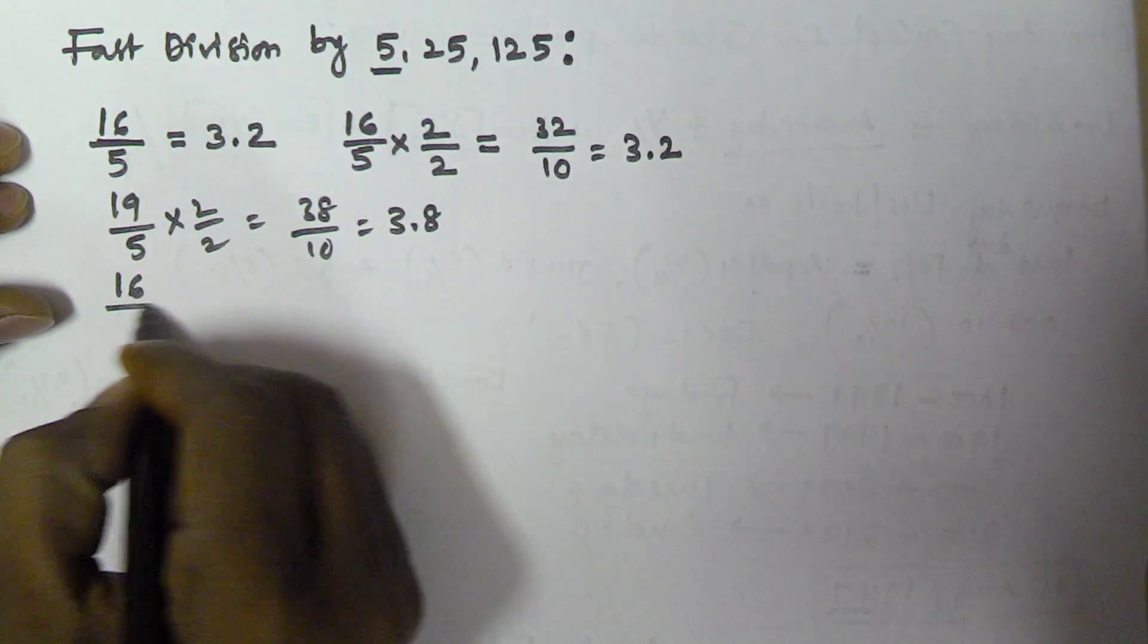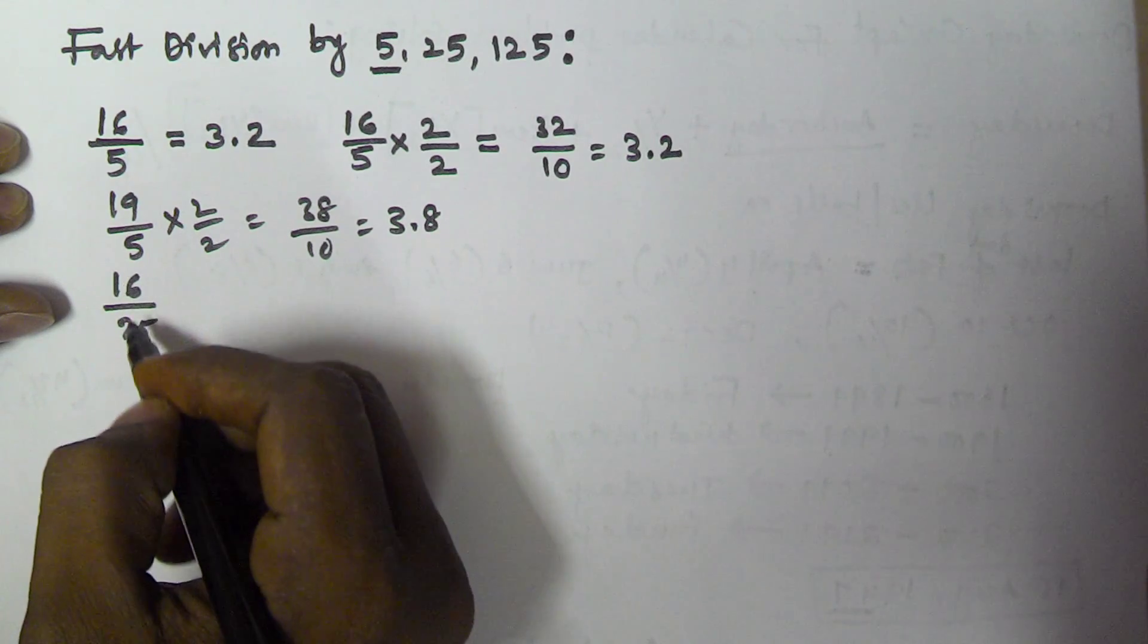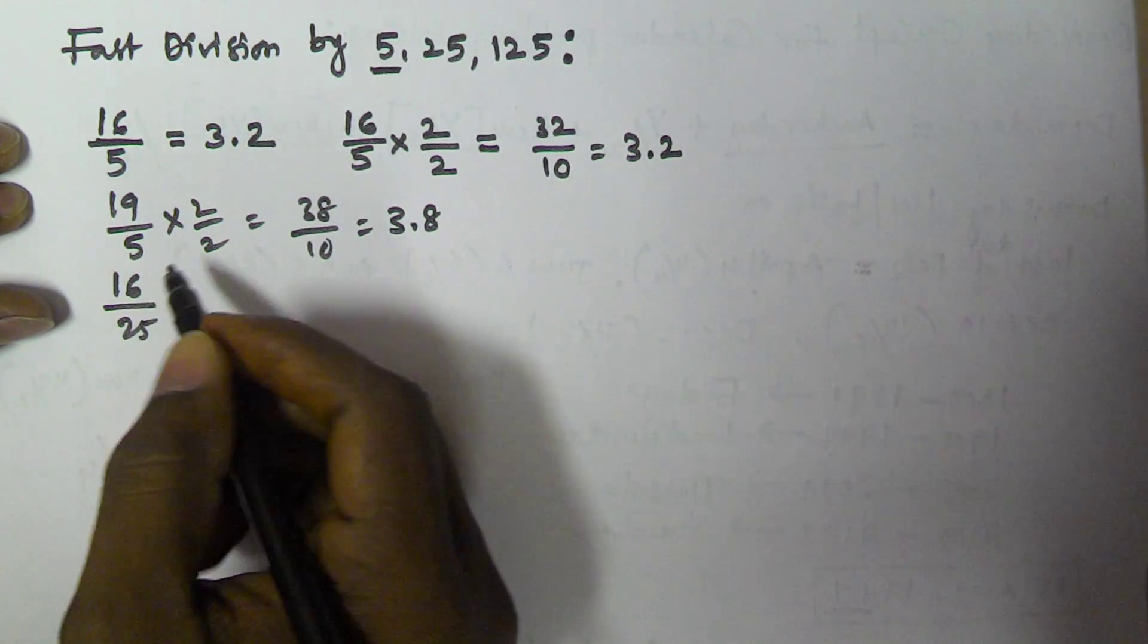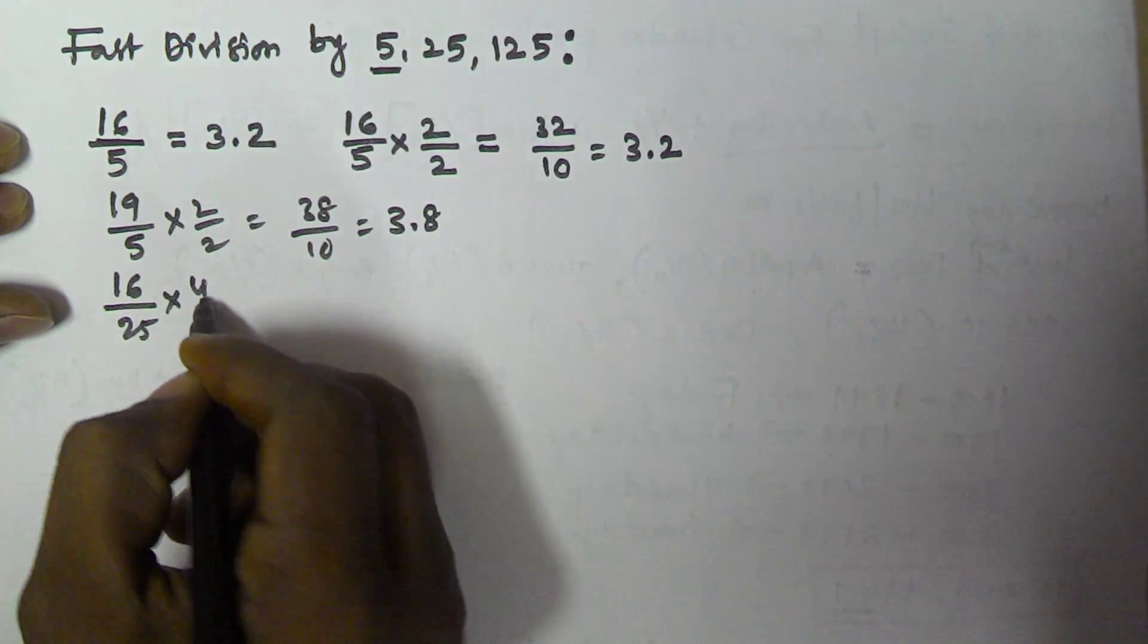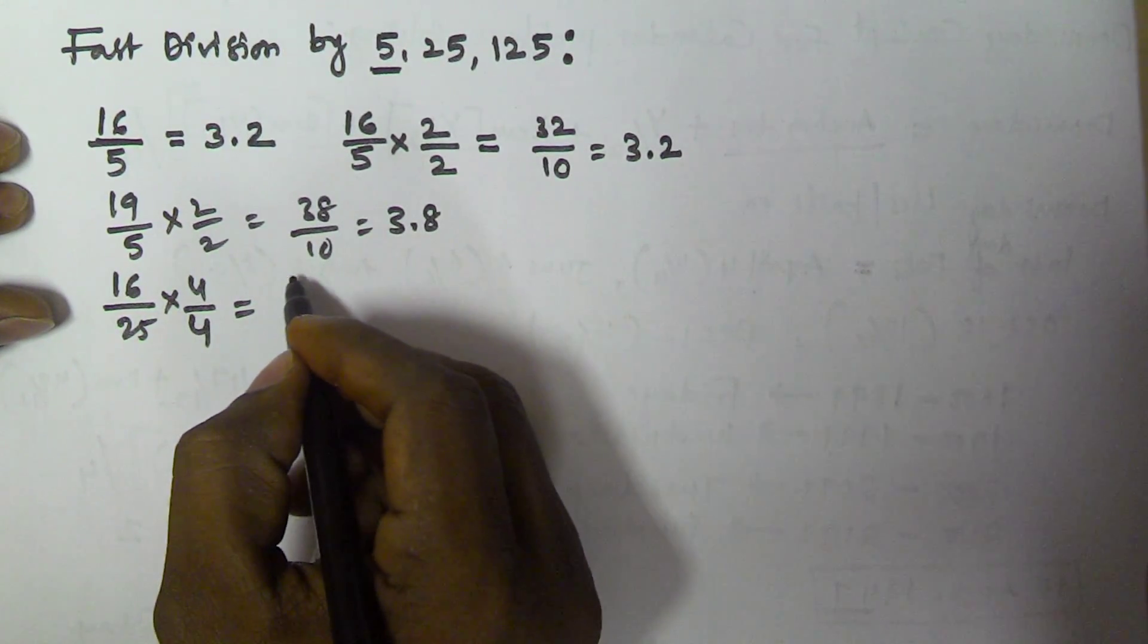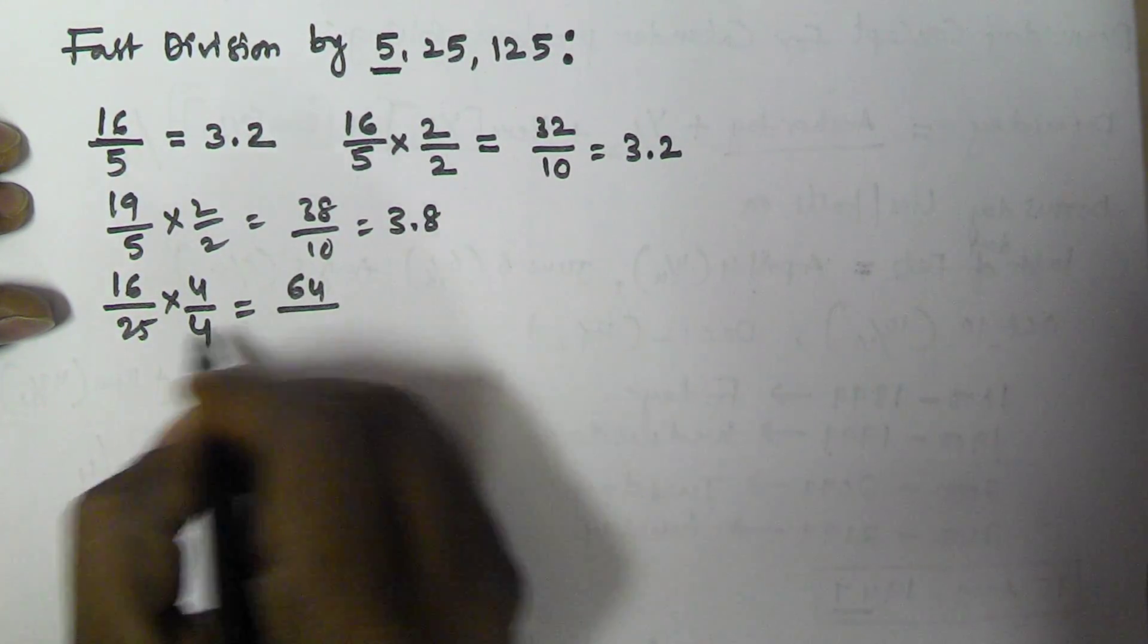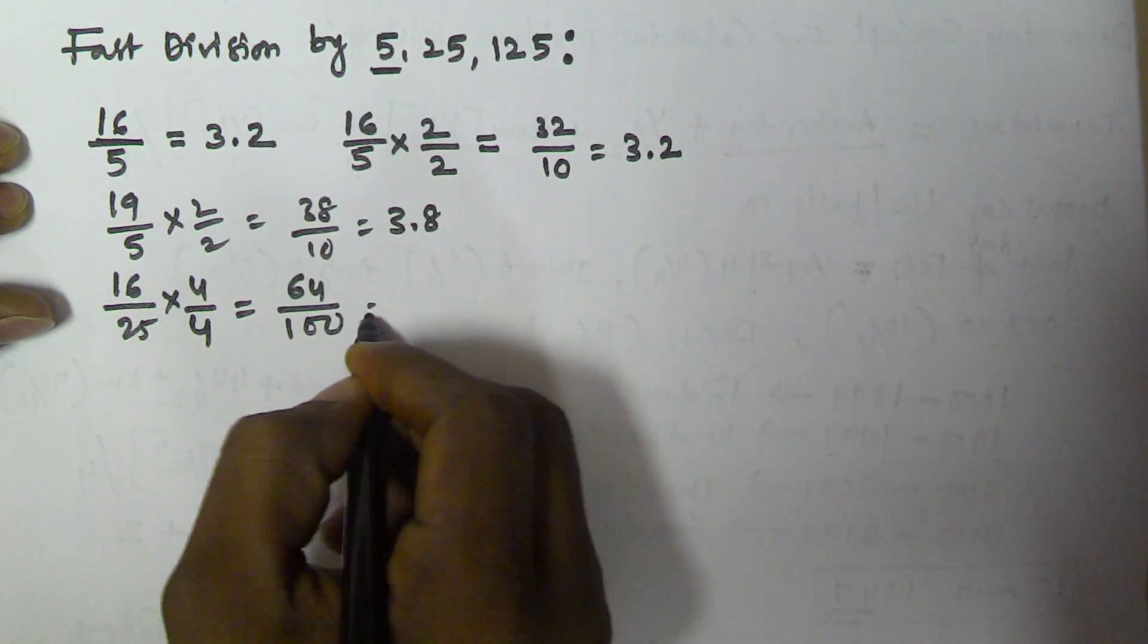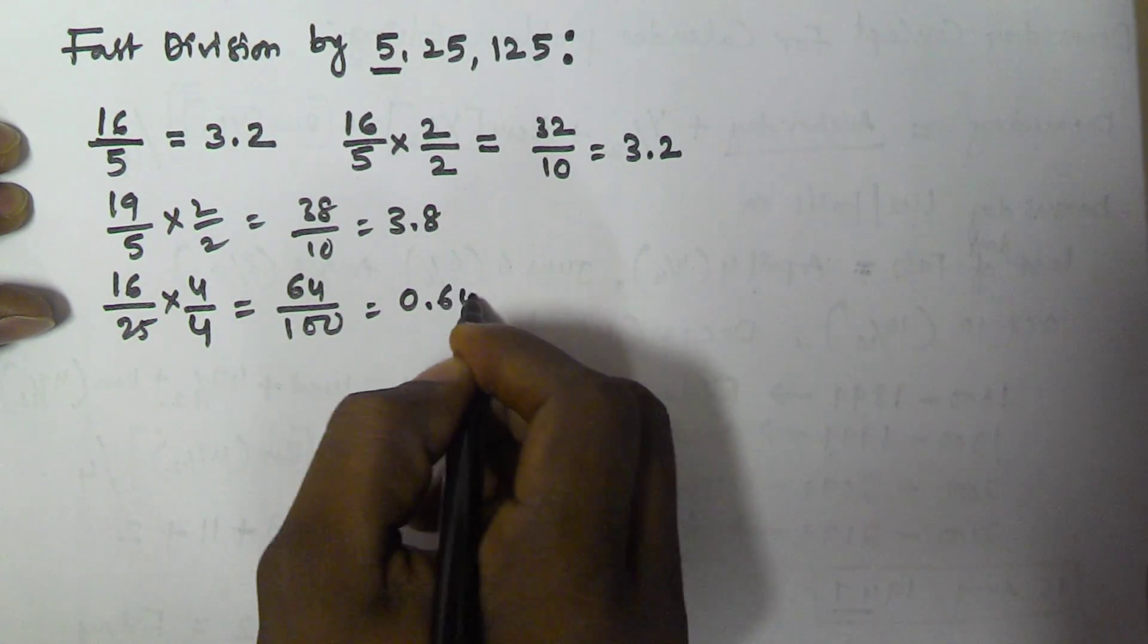In the same manner, for 16 by 25: whenever you are dividing a number by 25, simply multiply by 4. So that becomes 64 by 100, which equals 0.64.